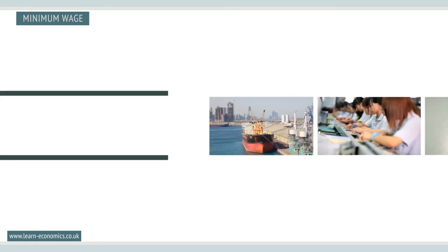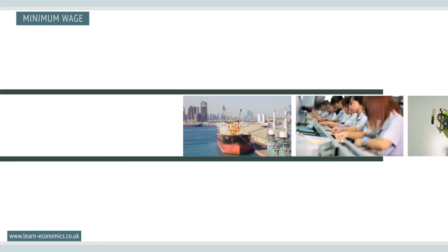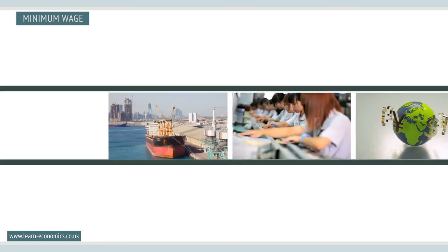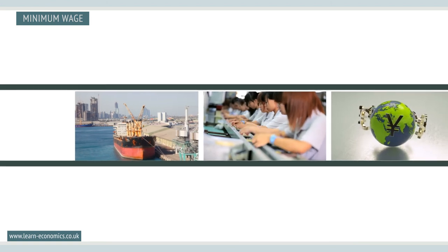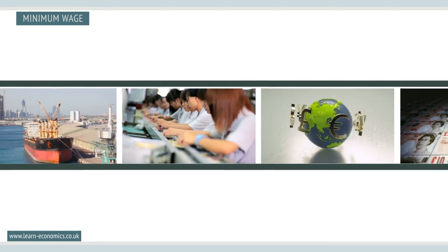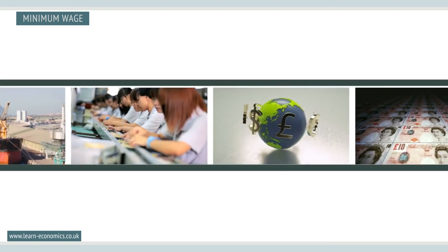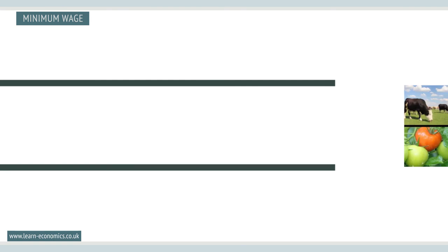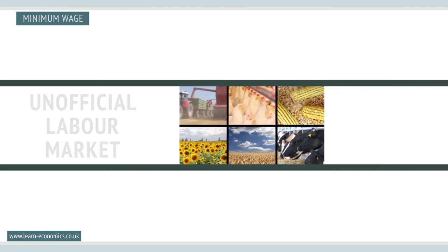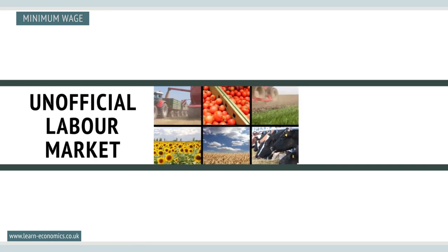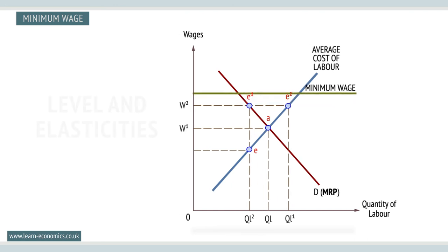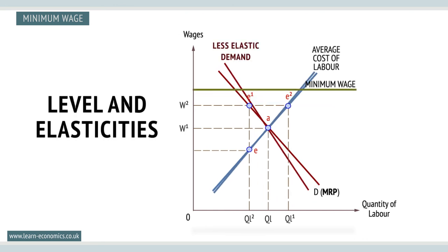The competitiveness of goods abroad can also suffer compared with low-wage economies, such as China and India. This can worsen the balance of payments. Similarly, inward investment may be deterred, as foreign investors will look to avoid high-wage economies. The labour market may also become inflexible in response to changes in the rest of the economy. Finally, workers and employers may be driven into the unofficial labour market. The full impact of a minimum wage depends upon the level of the minimum wage and the elasticity of demand for and supply of labour.